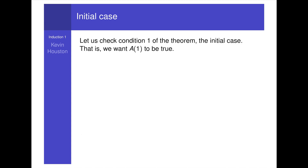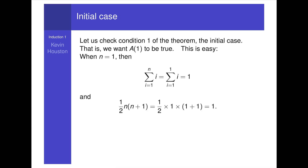Let us check condition 1 of the theorem — the initial case — that is, a_1 is true. This corresponds to pushing the first domino. When n equals 1, the summation of i from 1 to 1 is just 1. And the right-hand side, one-half of n times n plus 1, when n equals 1 also gives 1. So a_1 is true: the summation of i from 1 to n equals one-half of n times n plus 1 holds for n equals 1.